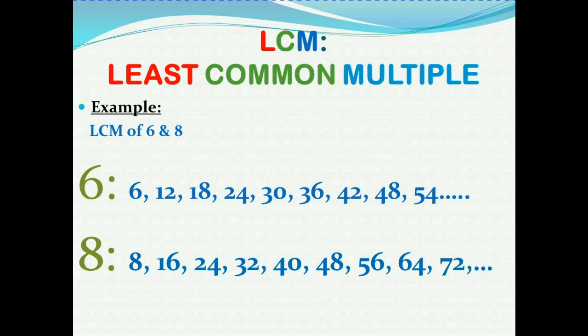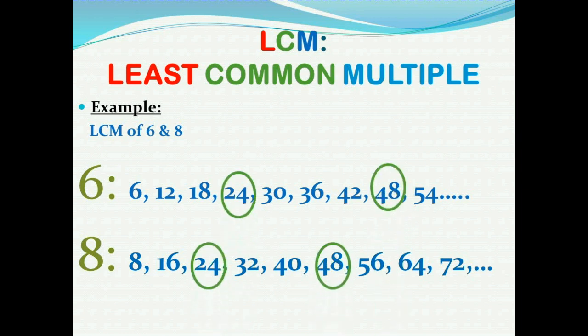As you know, the set of multiples of a number is an infinite collection. So here we have two infinite collections of multiples of 6 and 8. As per the definition of LCM, it is a multiple and it's a common multiple. Let's list out the common multiples — we are checking which numbers are common among these multiples. Marking the common numbers in green, we find 24, 48, and so on are common.